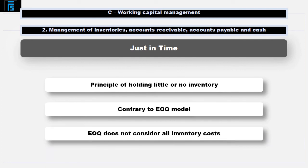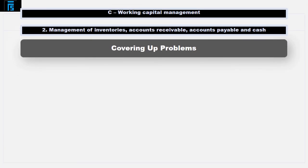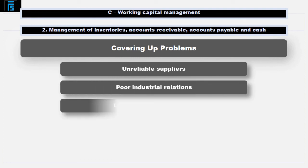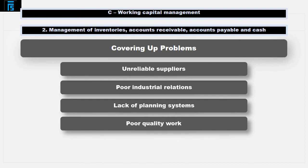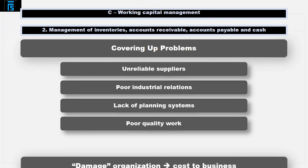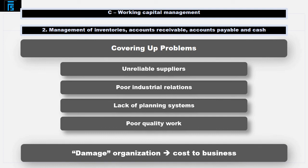Supporters of JIT would refute this and would argue that the EOQ does not consider all of the costs associated with inventory. Specifically, they would suggest that companies hold inventory to cover up problems or weaknesses within the business. These problems will include unreliable suppliers, poor industrial relations, lack of or poor planning systems, and poor quality work leading to rework or scrappage. All of these will make the coordination of material needs and supply extremely difficult, and the holding of inventories allows these inefficiencies to exist and to continue. All of these issues will damage the organisation and, accordingly, will represent a cost to the business that should be considered.